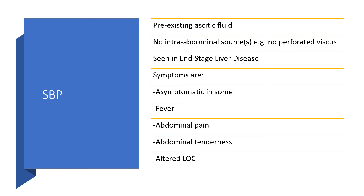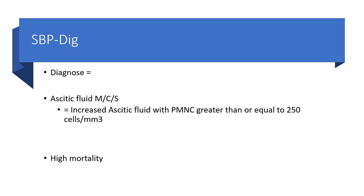What are the symptoms? Spontaneous bacterial peritonitis could be asymptomatic in some patients. When there are symptoms, they could be fever, abdominal pain, abdominal tenderness, and altered level of consciousness. How do we make the diagnosis? We can gather ascitic fluid for microscopy, culture, and sensitivity. We will likely be faced with increased ascitic fluid polymorphonuclear cells greater than or equal to 250 cells per cubic millimeter. Mortality in spontaneous bacterial peritonitis is pretty high.